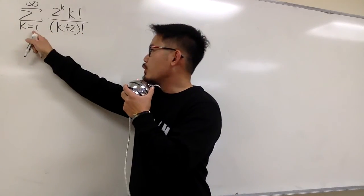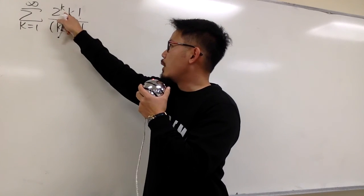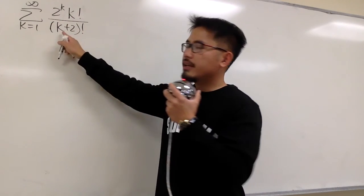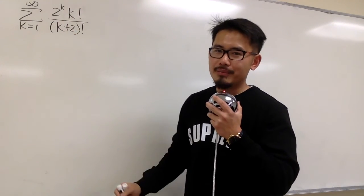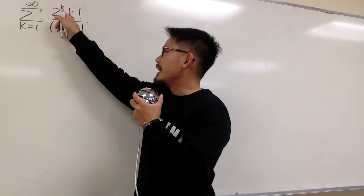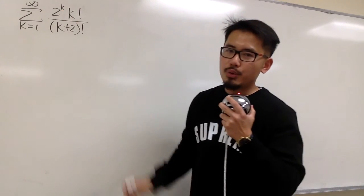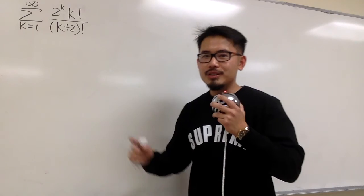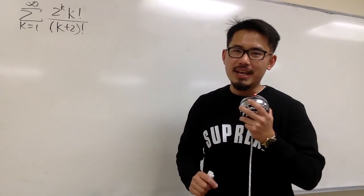Converge or diverge? We have sigma when k goes from 1 to infinity, 2 to the k's power times k factorial over k plus 2 in the parentheses factorial. As we can see, we have the k in the exponent and we also have the factorials, so a good choice to do this is to use the ratio test.